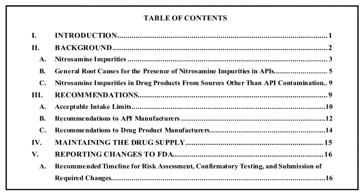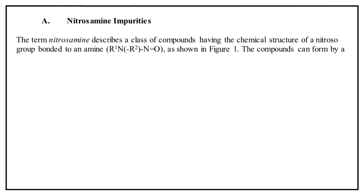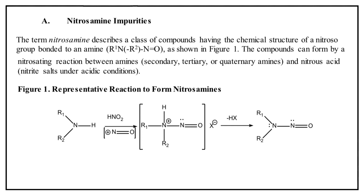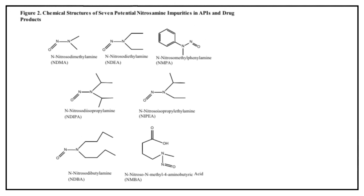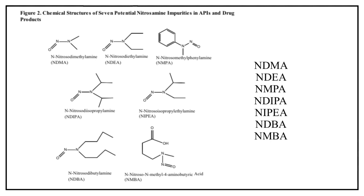The Background part of the guideline covers three topics. First, regarding Nitrosamine impurities: nitrosamines are chemicals having a nitroso group bonded to an amine — specifically secondary, tertiary, and quaternary amines. These compounds are generally produced due to nitrosating reactions between nitrous acid and amines under acidic conditions. When this guideline was published, FDA had identified seven Nitrosamine impurities: NDMA, NDEA, NMPA, NDIPA, NIPEA, NDBA, and NMBA.